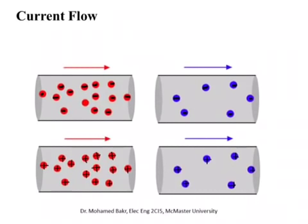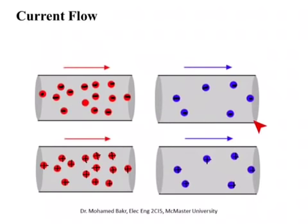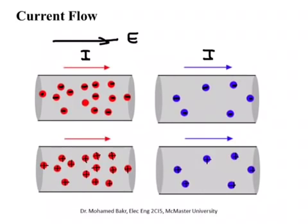We have two situations with two different types of materials. In the first scenario we have lots of electrons available for conduction — this is a good conductor with high sigma, high conductivity. In the second we have fewer electrons — this may be an insulator or a poor conductor. In both cases the current flows in a shown direction, and the electric field points in the same direction as the current. Someone might ask: the charges are negative, not positive.